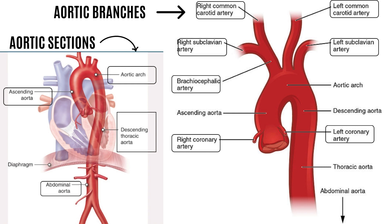The brachiocephalic trunk gives out two more branches that are right common carotid and the right subclavian artery. The aorta becomes the descending aorta after the aortic arch and continues to descend via the diaphragm into the abdomen. Even in the thorax, the descending aorta gives out some branches like the bronchial arteries, pericardial branches, etc.